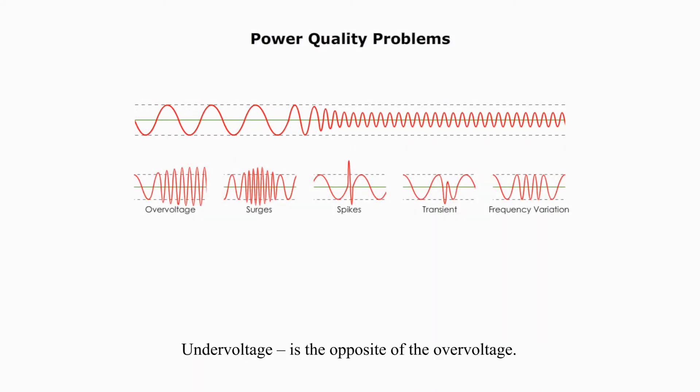Undervoltage is the opposite of overvoltage. It is defined as a condition where the applied voltage drops to about 90% of normal range or nominal voltage value. Undervoltage is also known as brownouts.